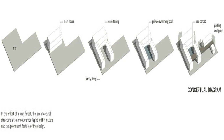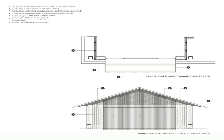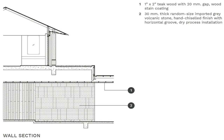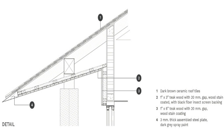Moving through the interior, the high ceilings continue into the living and dining areas. Floor-to-ceiling glazing creates a cozy and comfortable indoor-outdoor ambience. The main pantry is another exquisite space, with a view of the swimming pool and an 8-meter long counter running from the main dining area. This pantry also serves to support outdoor activities and entertainment.